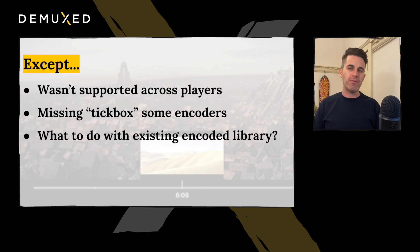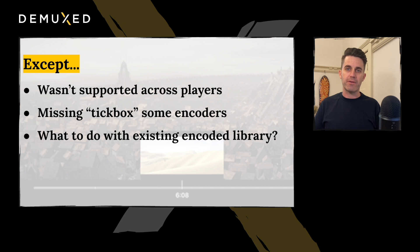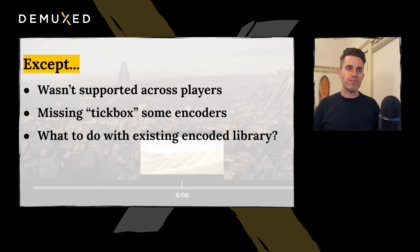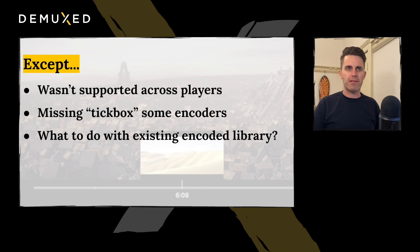But that's not exactly what my experience was. We found immediately that we had players that wouldn't support this feature. We were missing the tick box — we couldn't just turn on this rendition as part of our encoding stack immediately. So we had to evolve to that. And then what do we do with the existing encoded library? Are we really proposing retranscoding, re-encoding it all? How do we get to a state where we have this feature without that overhead?